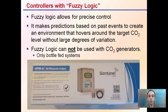We can precisely dial in what the light intensity should be. Fuzzy logic makes predictions based on past events to create an environment that hovers around the target CO2 level without large degrees of variation — that includes large degrees of overshooting or undershooting.